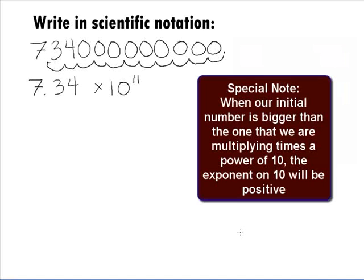Note how the number we started with is a bigger number than the one we are multiplying by in the scientific notation. When that is the case, we will end up with a positive exponent.